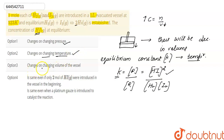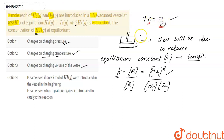Next: does the concentration of HI change on changing the volume of the vessel? As already discussed, if the volume of the container decreases, concentration increases. So if we change the volume, concentration also changes. Option 3 is also correct.